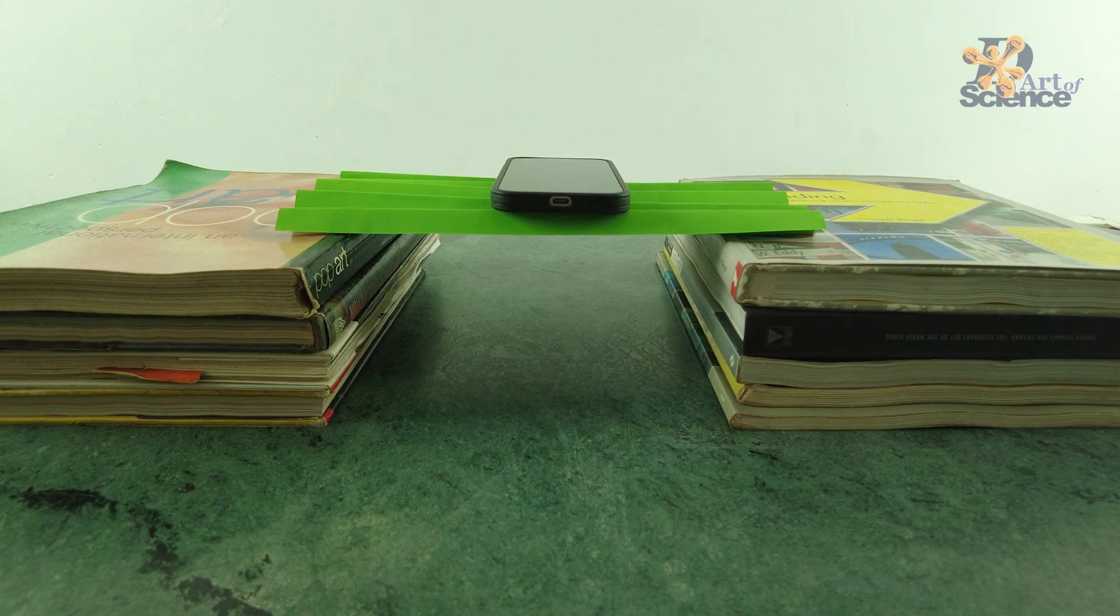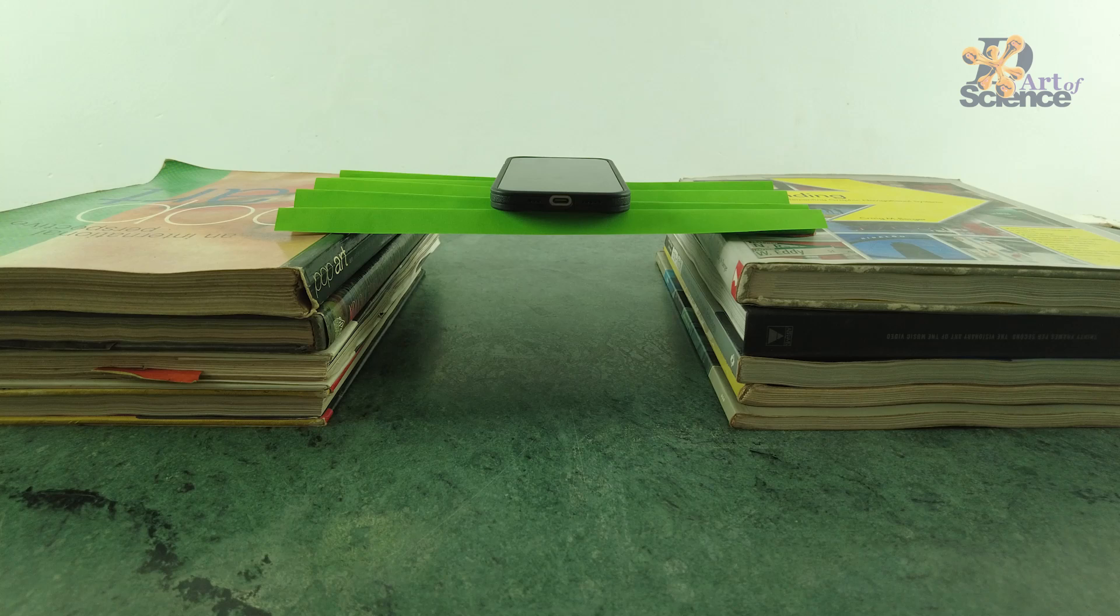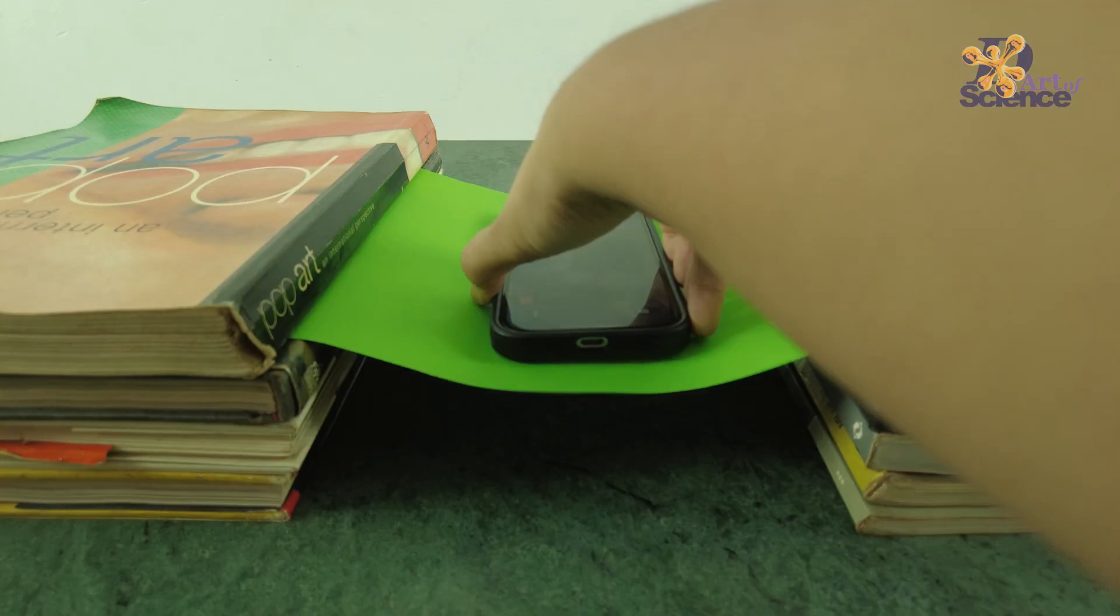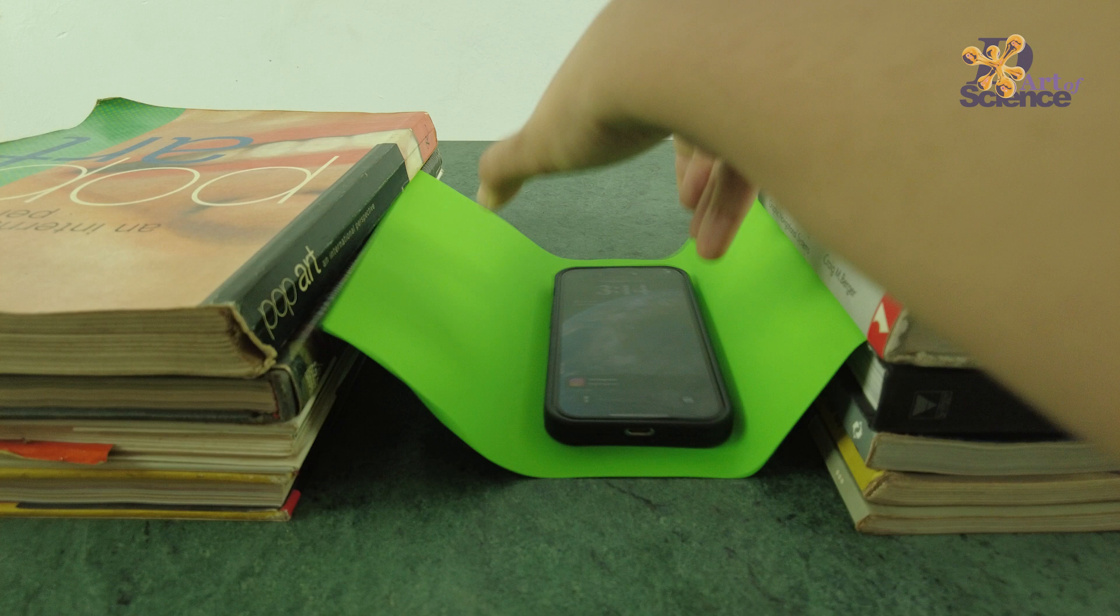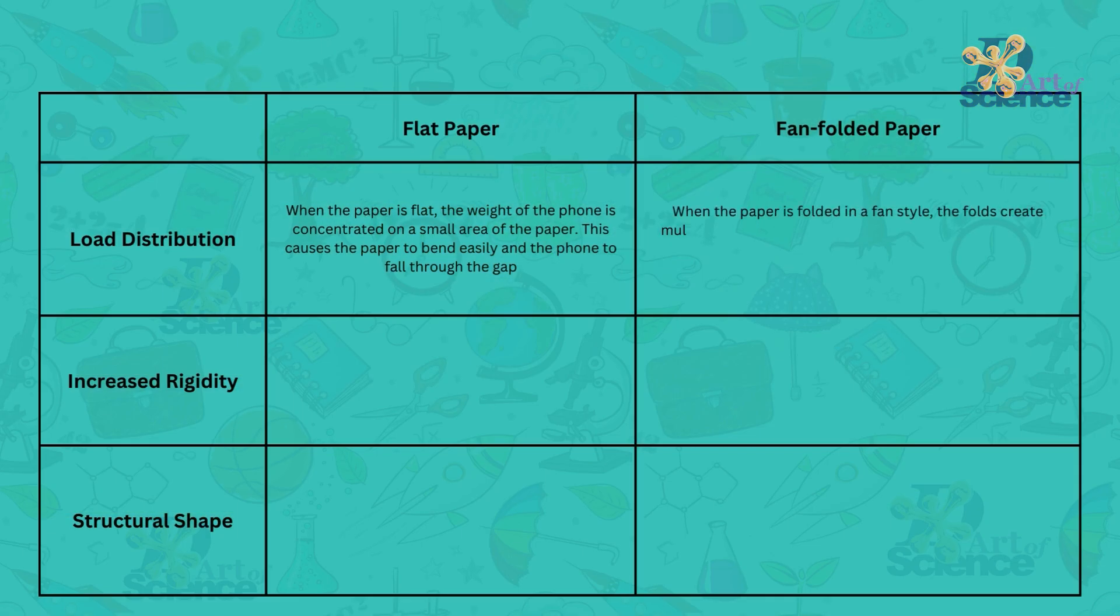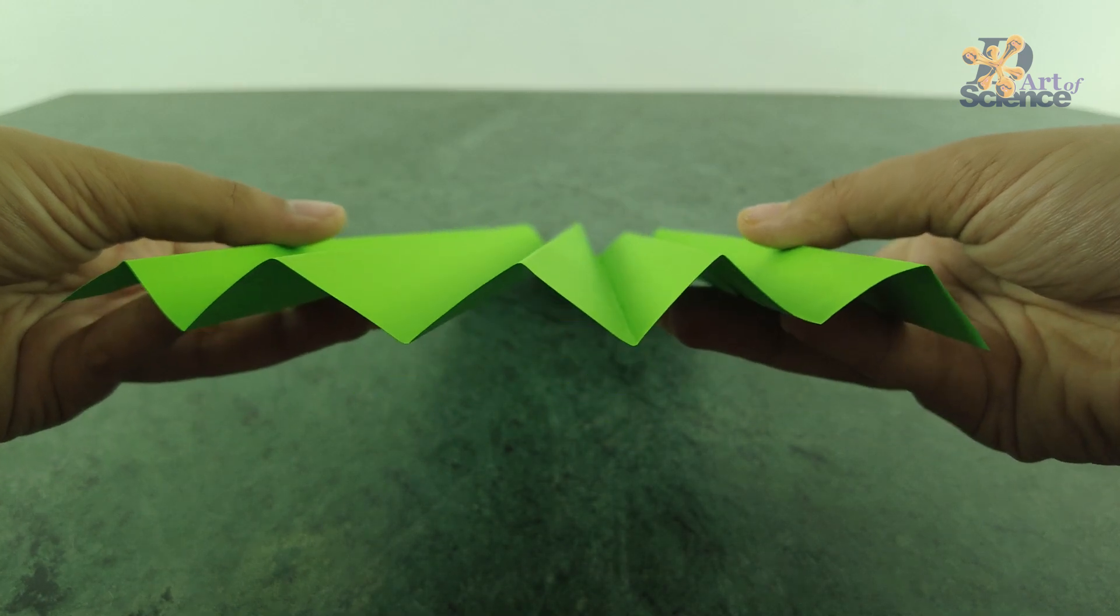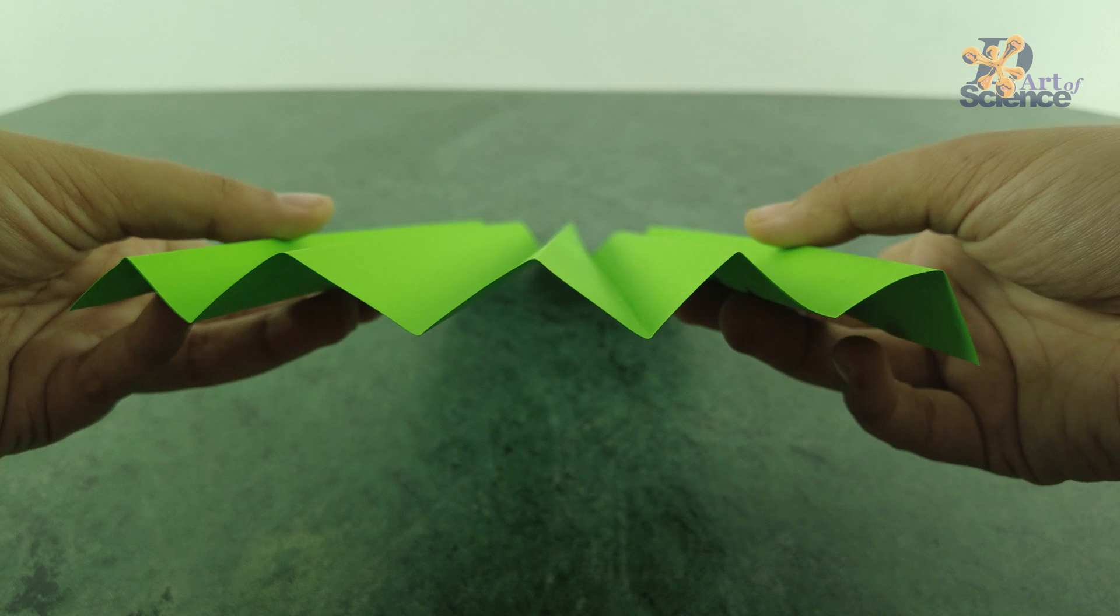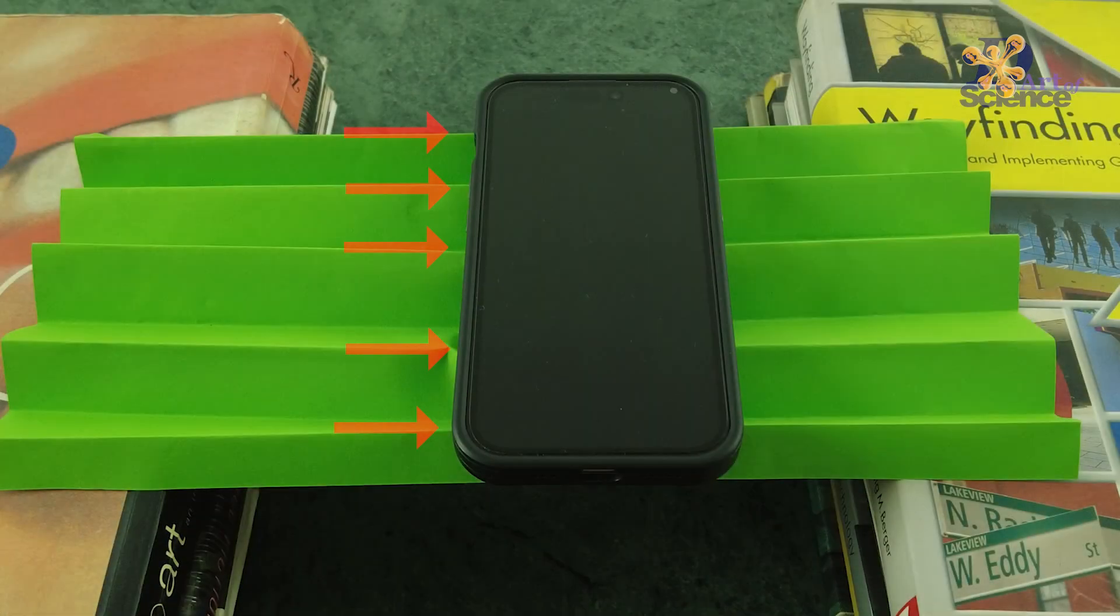So, what even happened? How did this work? The science behind it is pretty interesting. It all lies in the small ridges of the folded paper. Firstly, load distribution. When the paper is flat, the weight of the phone is concentrated on a small area of the paper. This causes the paper to bend easily and the phone to fall through the gap. But when the paper is folded in a fan style, the folds create multiple small peaks and valleys, effectively increasing the number of contact points and distributing the weight of the phone more evenly across the paper.